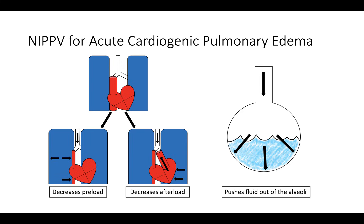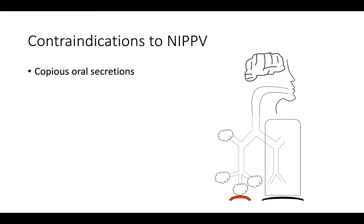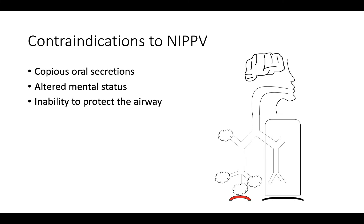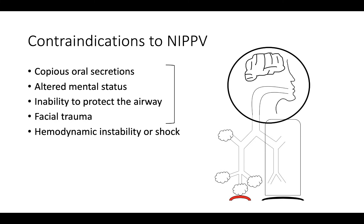Before putting the mask on a patient's face for non-invasive positive pressure ventilation, always consider the major contraindications. Things to consider include whether there are copious oral secretions, as positive pressure could lead to aspiration and worsen respiratory distress; altered mental status; inability to protect the airway; facial trauma; and hemodynamic instability or shock. Note that the majority of these contraindications deal with the CNS, head, and neck. Patients with COPD, asthma exacerbations, and acute cardiogenic pulmonary edema benefit from non-invasive positive pressure ventilation.